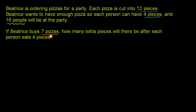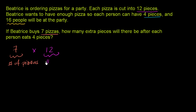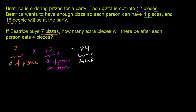She ordered seven pizzas — how many total pieces are there going to be? Well, you have seven pizzas, and if you have 12 pieces per pizza, you multiply by 12 to get the total number of pieces. Seven times 12 is equal to 84 total pieces. So that's how many pieces she's got.